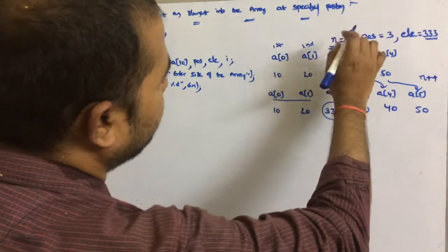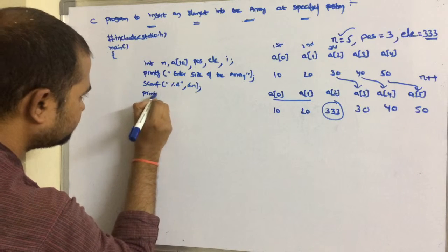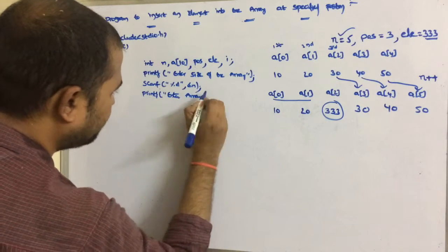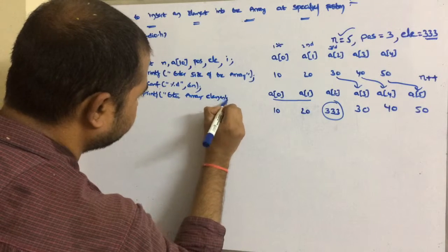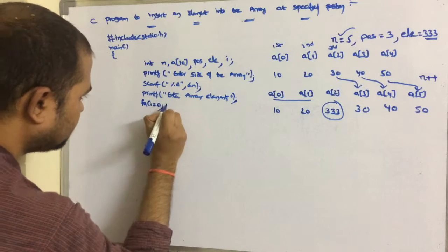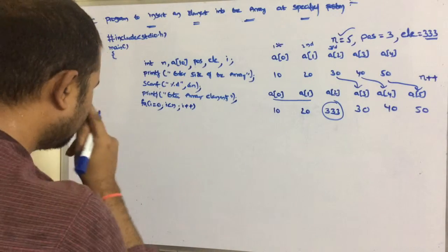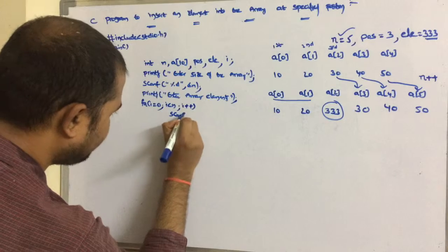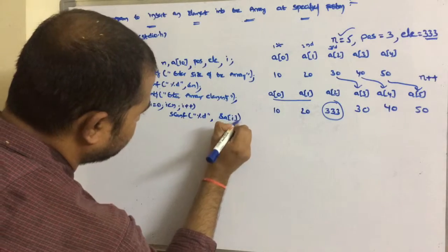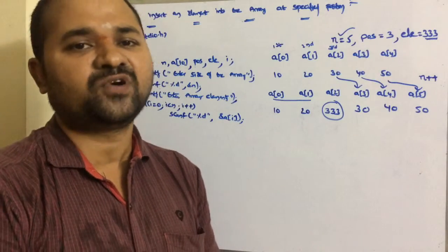Let n value be 5. Next we read the array elements: printf enter array elements, then a for loop from i equals 0, i less than n, i plus plus, with scanf %d ampersand a[i]. Let the elements of the array be 10, 20, 30, 40, and 50.